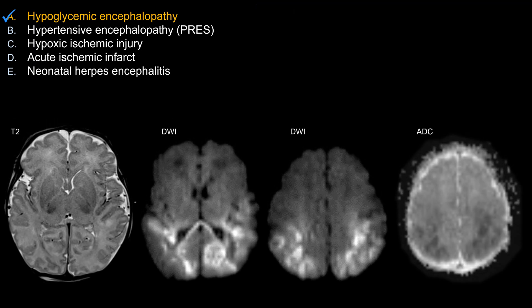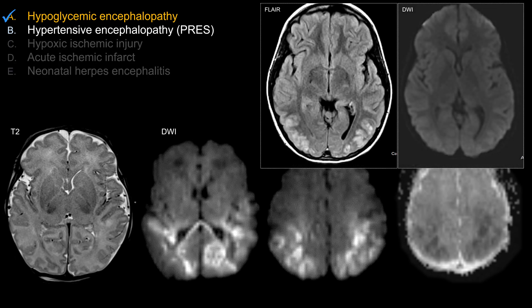Let's look at other choices that do not work as well in this case. For PRES — hypertensive encephalopathy — this is an example of an older child with PRES. Yes, it does have a similar posterior distribution, similar to that of hypoglycemic encephalopathy. However, classically, PRES does not have restricted diffusion. Often you will see T2 shine-through, but the majority of PRES does not have restricted diffusion. So this makes it not the best choice here. Also, PRES is quite rare in neonates; the majority of cases tend to occur in adults.